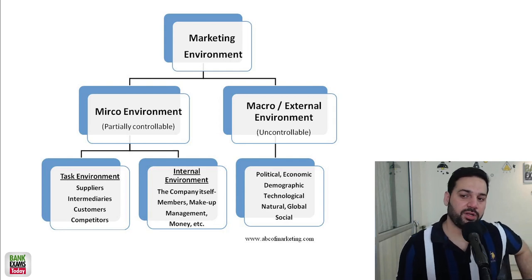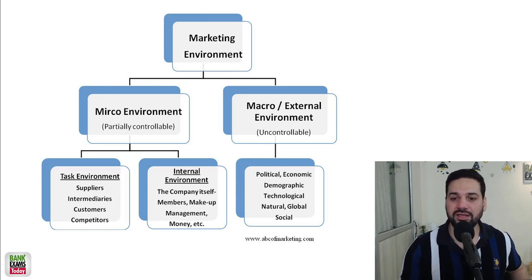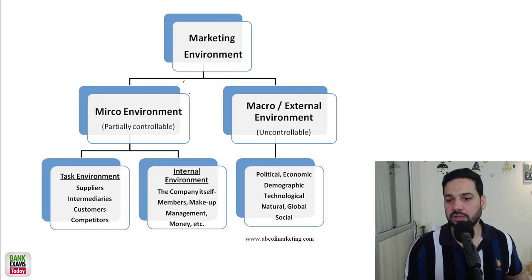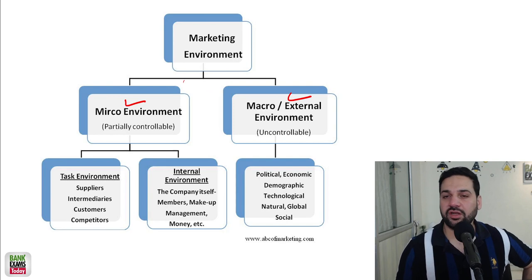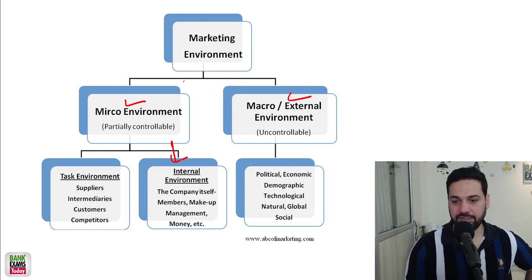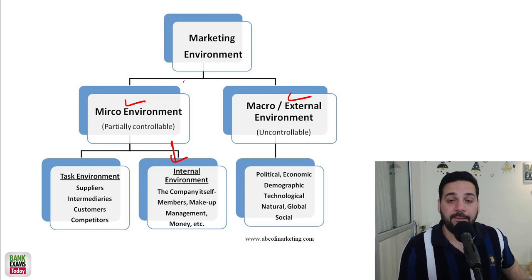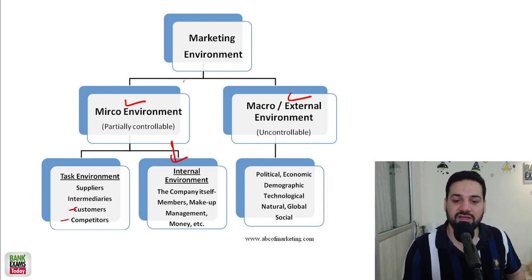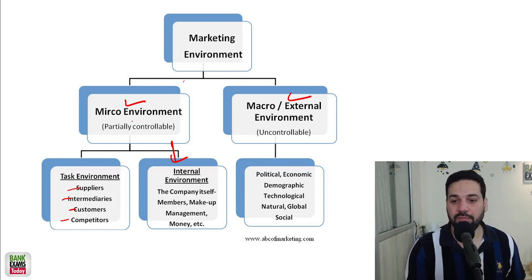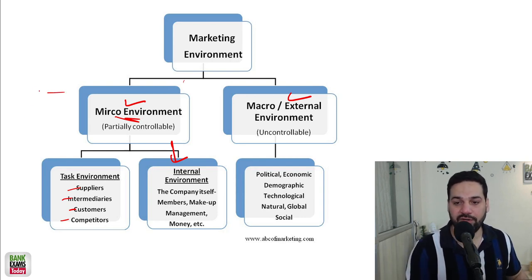The next topic: what is the marketing environment? In the marketing environment, we can divide it into two portions — micro environment and external or macro environment. Many students confuse micro environment with internal environment. In the internal environment, there is management and employees. But in the micro environment, suppliers, customers, intermediaries, and competitors are also there. So this is the task environment — micro environment is not only the internal environment.